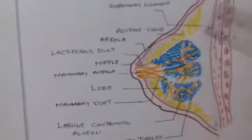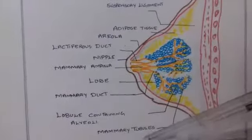Good morning my dear students. Today we are going to study about the structure of mammary gland. This mammary gland is the modified sweat gland.